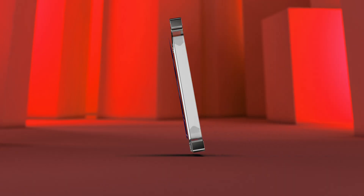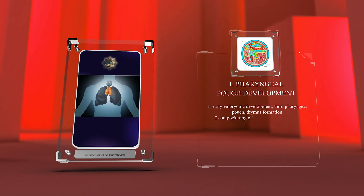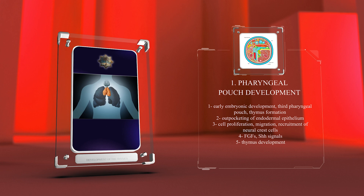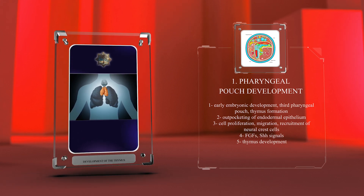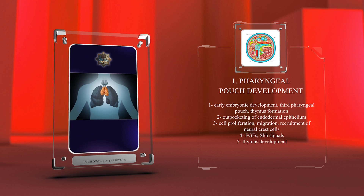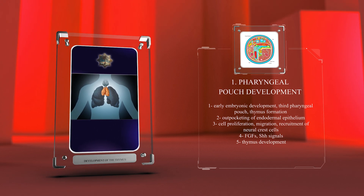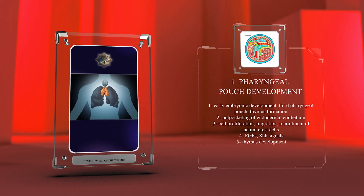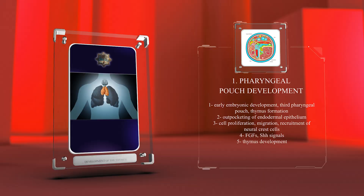During early embryonic development, the third pharyngeal pouch is responsible for thymus formation. This involves the outpocketing of endodermal epithelium, which creates the pouch. Sequential steps such as cell proliferation, migration, and recruitment of neural crest cells, regulated by signals like FGFs and SHH, contribute to thymus development.